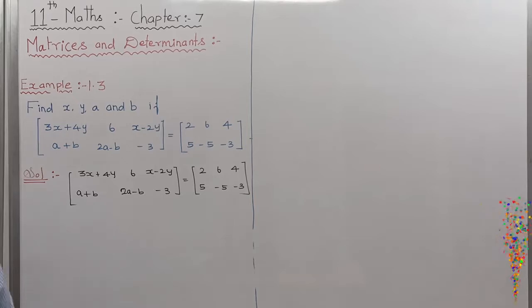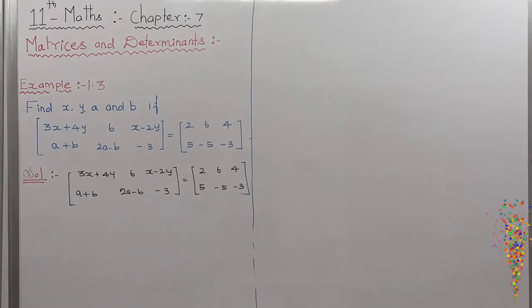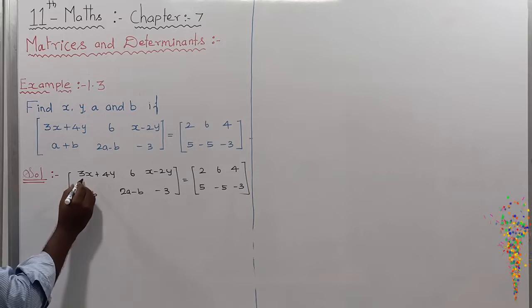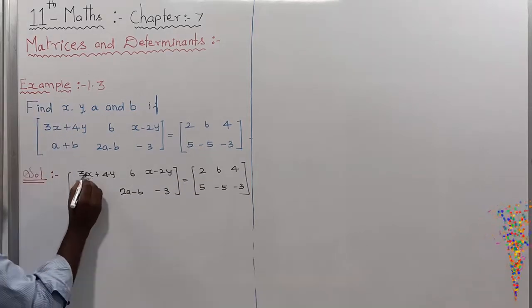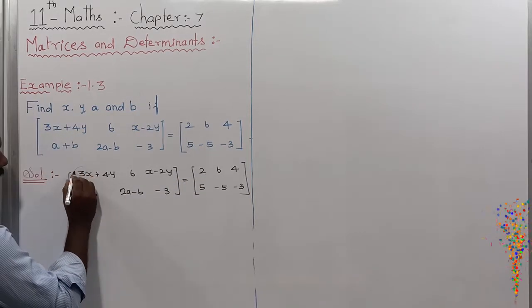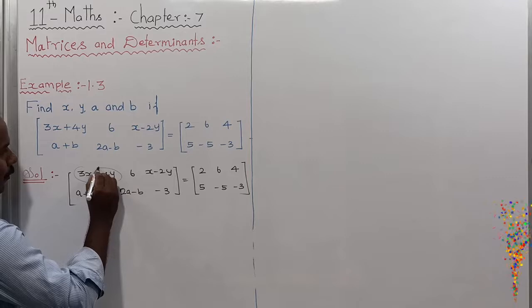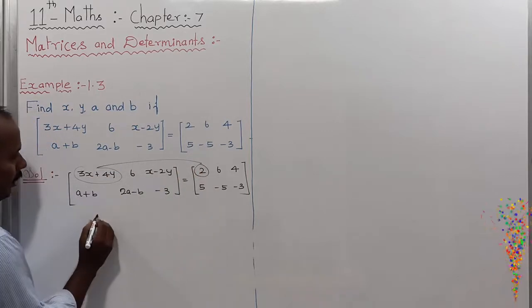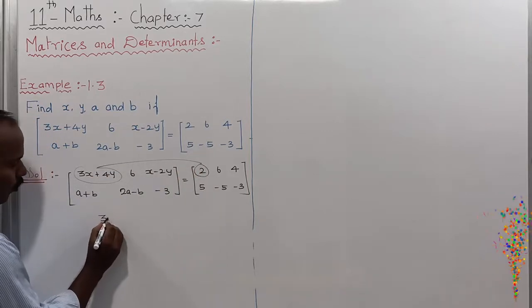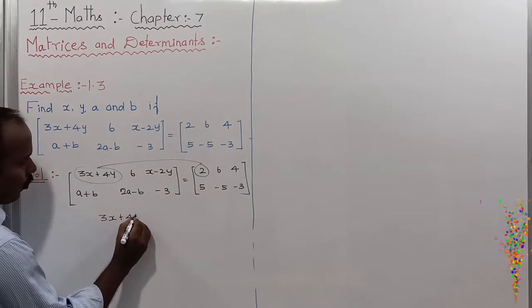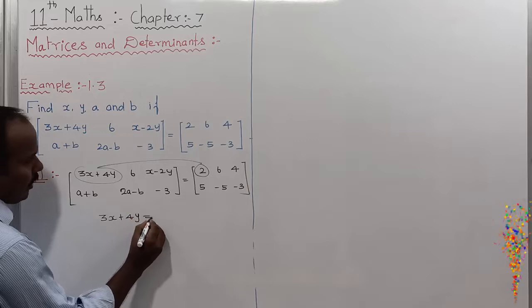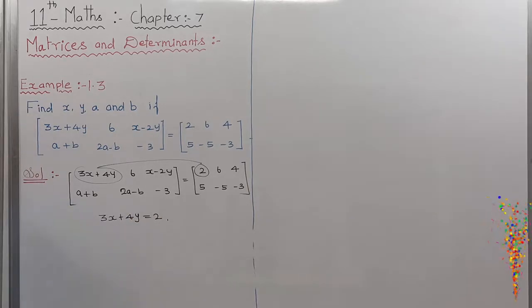The corresponding elements are also equal. The first element is A11 — this one is A11, so they are equal. Now, 3X plus 4Y is equal to 2. This is the first equation.